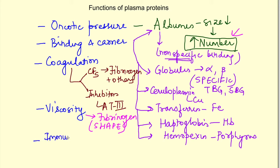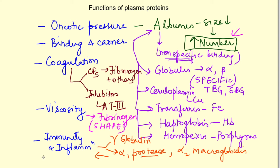The plasma proteins are important for immunity and inflammation. Gamma globulins are basically antibodies secreted by B lymphocytes, and we know the role of antibodies in immunity. Apart from this, there is alpha-1 protease and alpha-2 macroglobulin, which are protease inhibitors that help in limiting inflammation.